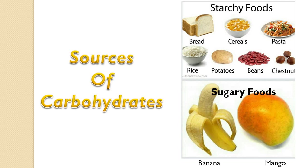The food which contains carbohydrate in the form of starch is known as starchy food, such as bread, cereals, pasta, rice, potatoes, beans and chestnuts. The other carbohydrate type is sugar. Banana and mango are very sweet fruits, meaning they are a good source of carbohydrates in the form of sugar.